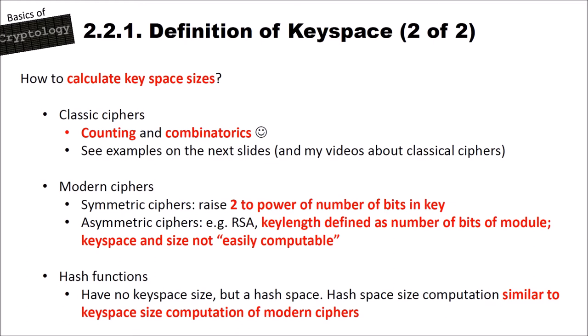With asymmetric ciphers like RSA, the key length is defined as the number of bits of the modulus, but the keyspace size cannot easily be computed. We also have hash functions, which have no keyspace size but a hash space. The hash space size computation is similar to keyspace size computation of modern ciphers, and we also express these as a power of 2.